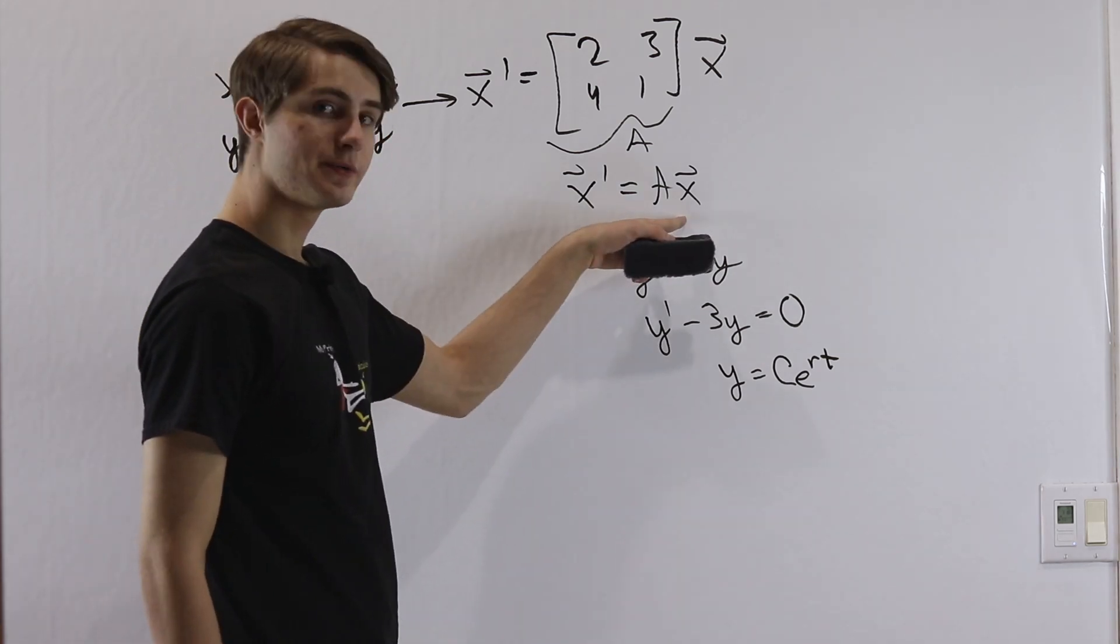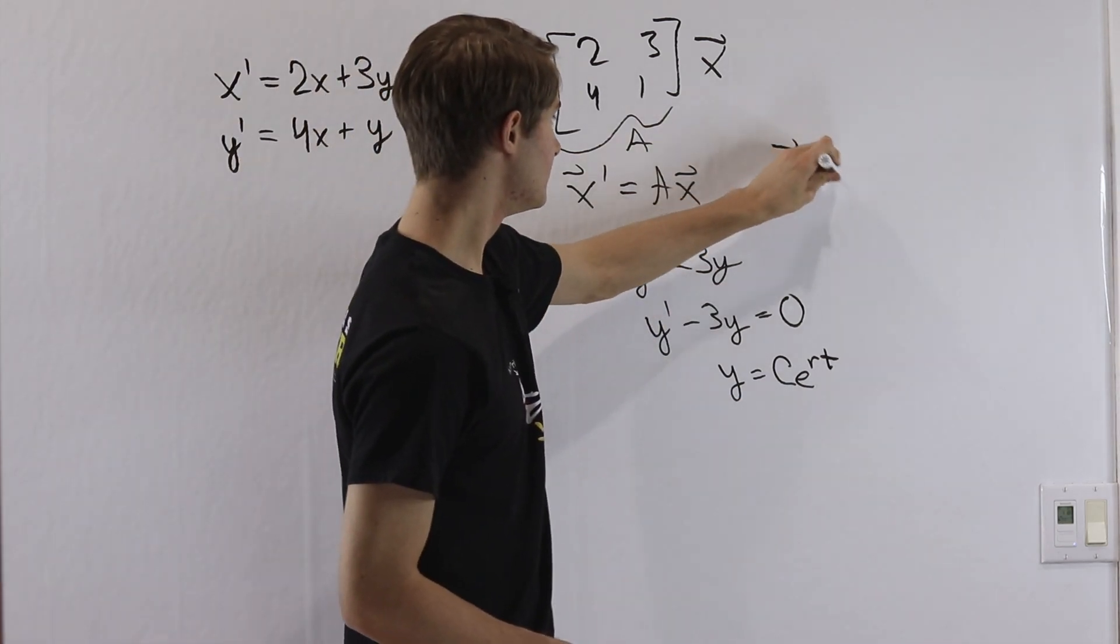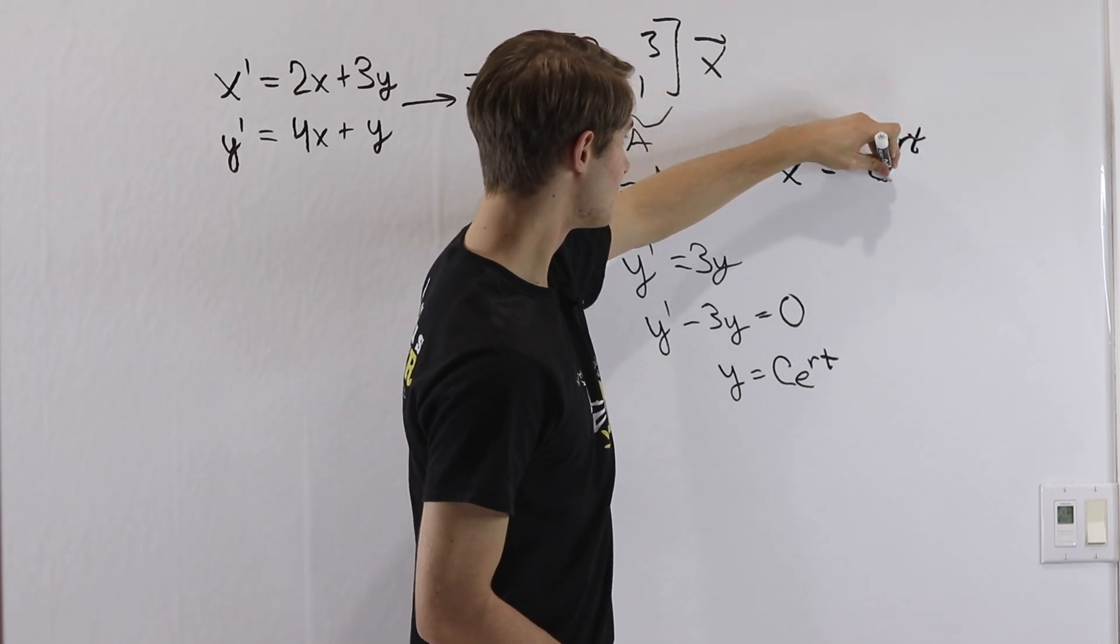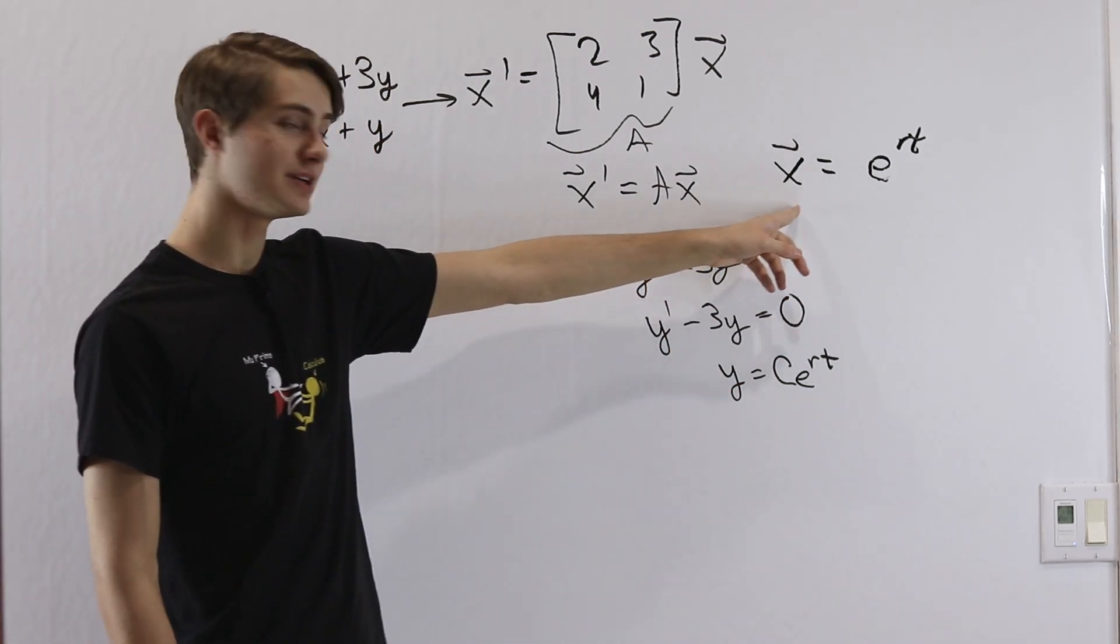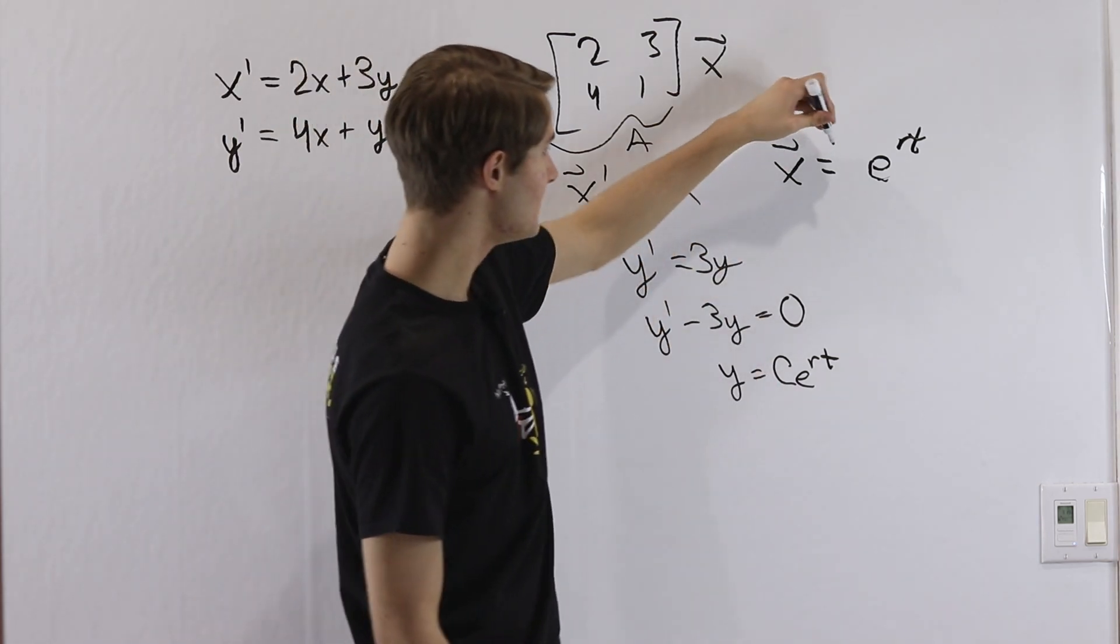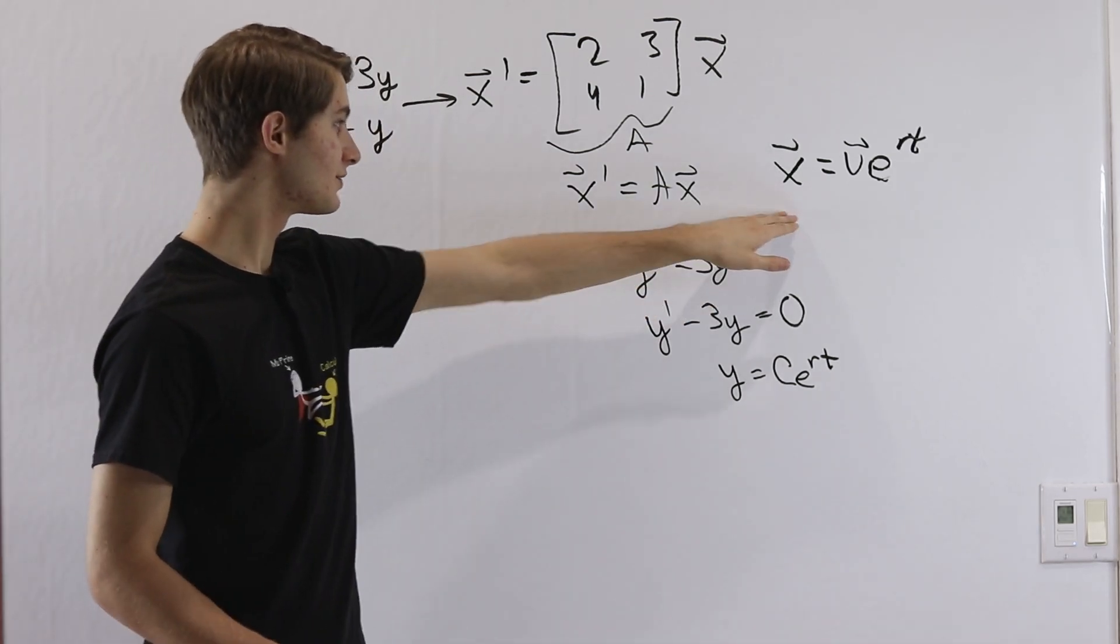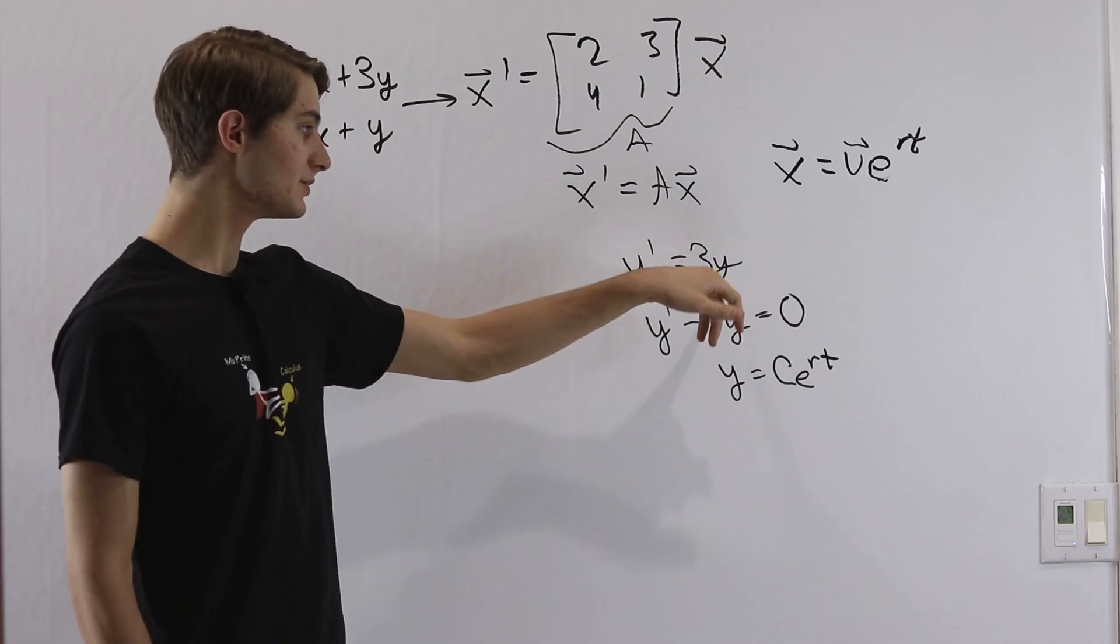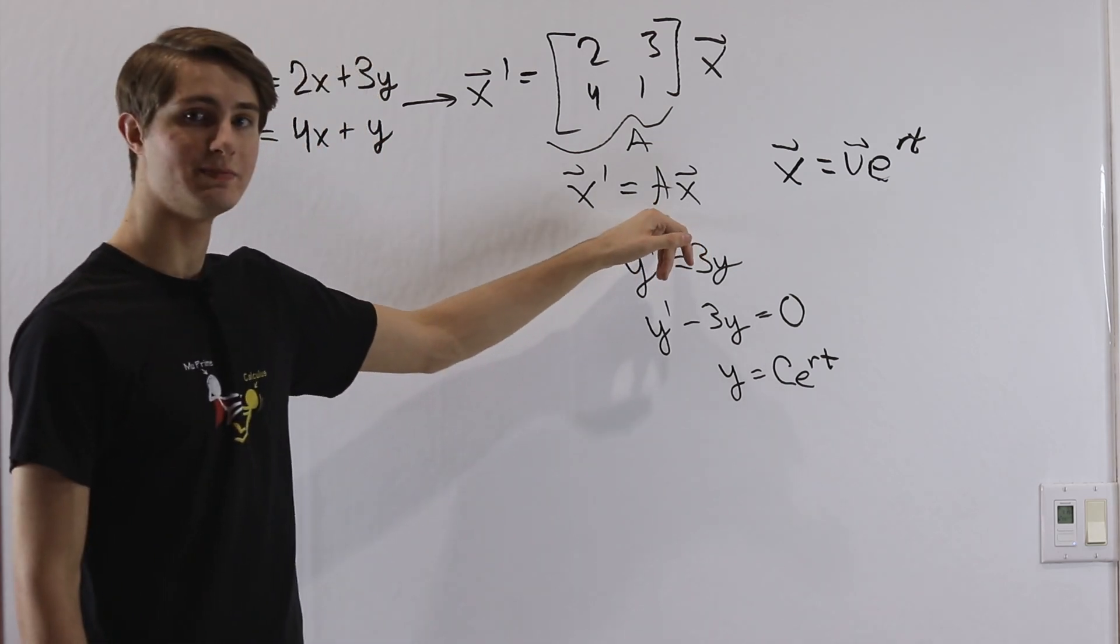So we want to think about what we're going to set x equal to for our guess. We want x to be equal to, well we know it's going to be something times e to the rt. But remember that x is a vector. So e to the rt is just a number. We're going to need to multiply this by some vector in order to turn it into the vector that we want. So instead of having a constant c, we're going to have some vector of constants that I'll call v. So this is our guess for what x is equal to. Because just like with y prime equals 3y, doing the derivative multiplies it by 3, when we have x prime equals Ax, doing the derivative multiplies it by this matrix.